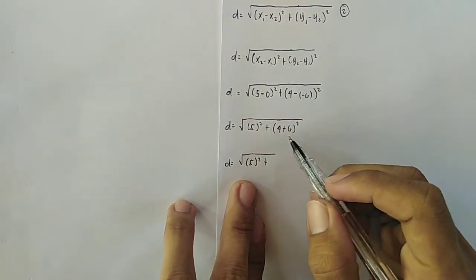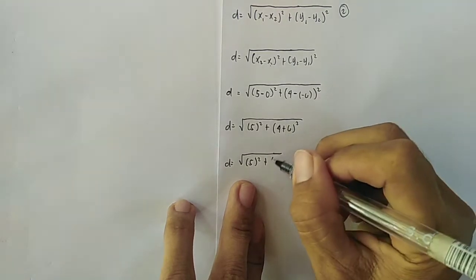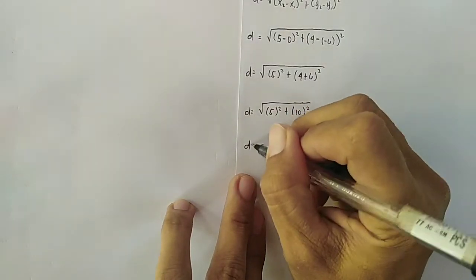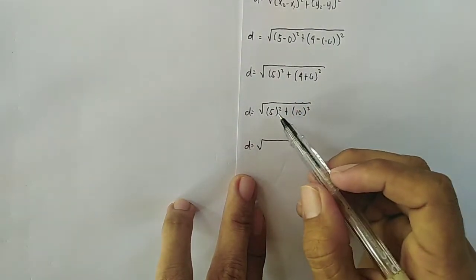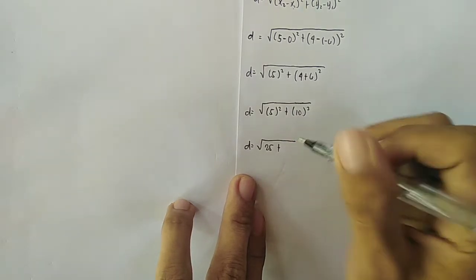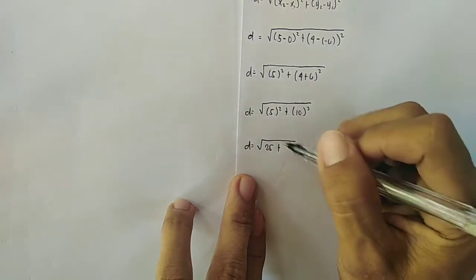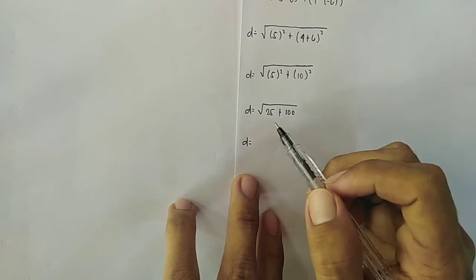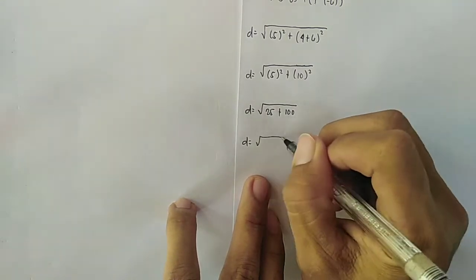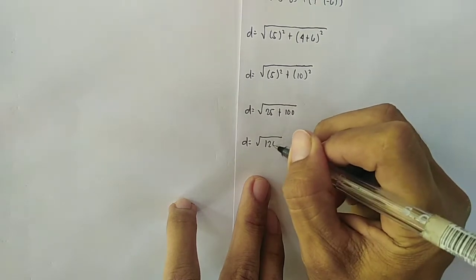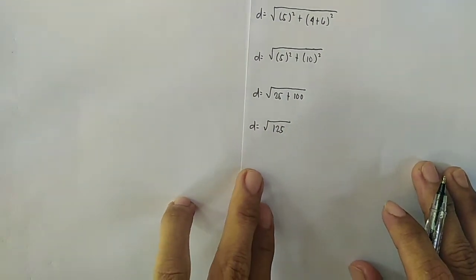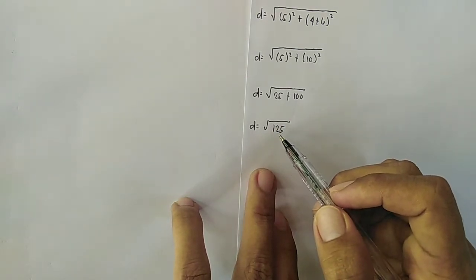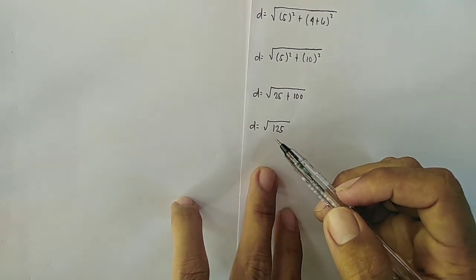Continuing: square root of 5 squared plus 10 squared. 5 squared is 5 times 5 equals 25. 10 squared is 10 times 10 equals 100. So D equals the square root of 25 plus 100, which is the square root of 125.